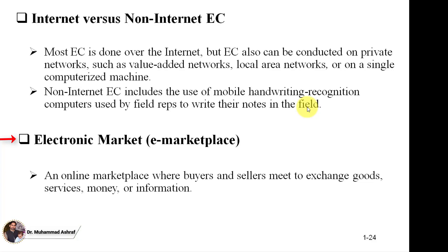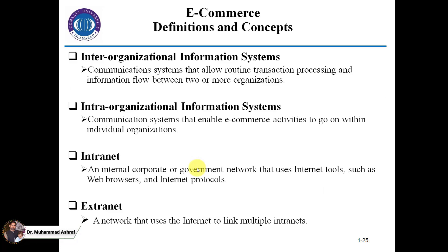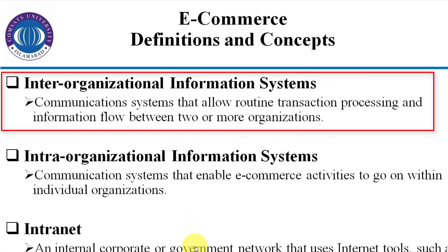For example, in the traditional marketplace you have to physically go there — to malls or other businesses. In the electronic marketplace, transactions happen digitally. When two organizations use an information system to handle routine transactions or share information, we say they use an inter-organization information system.